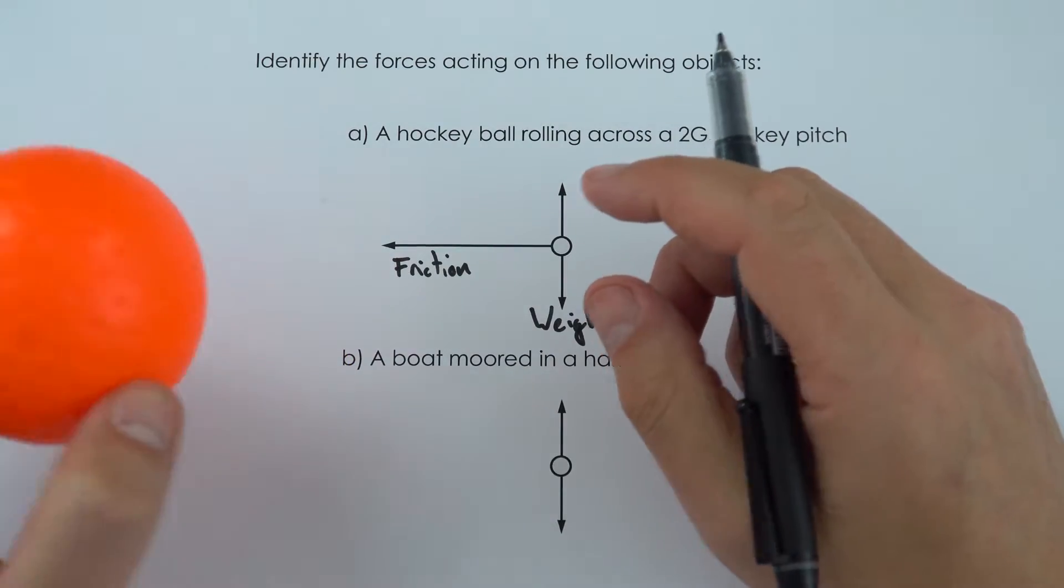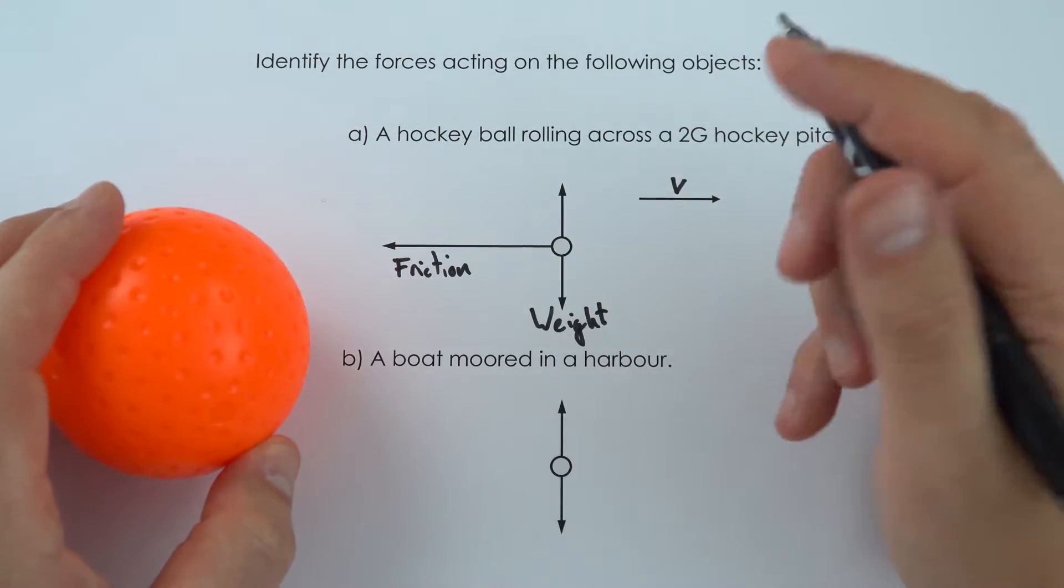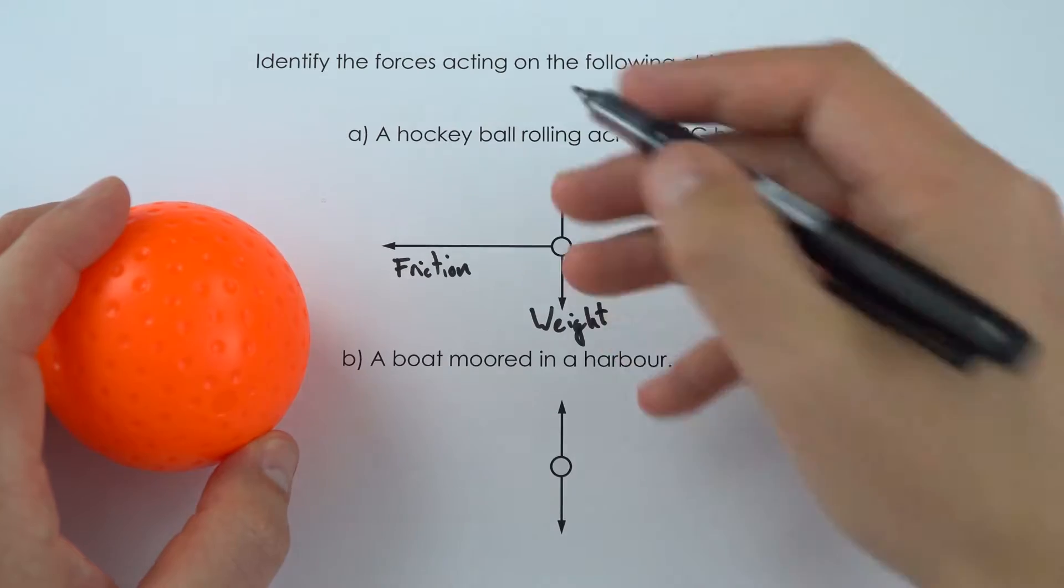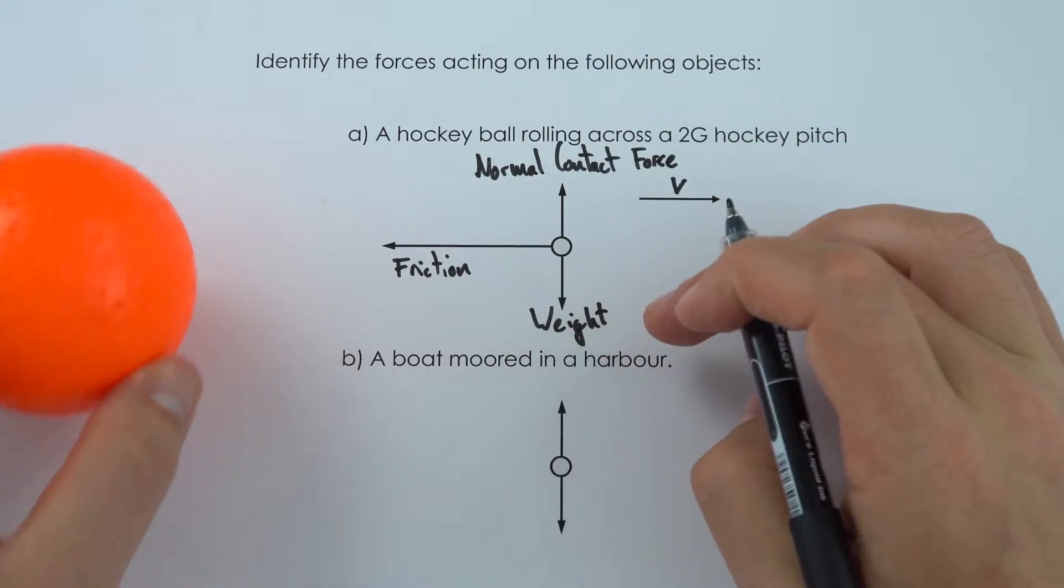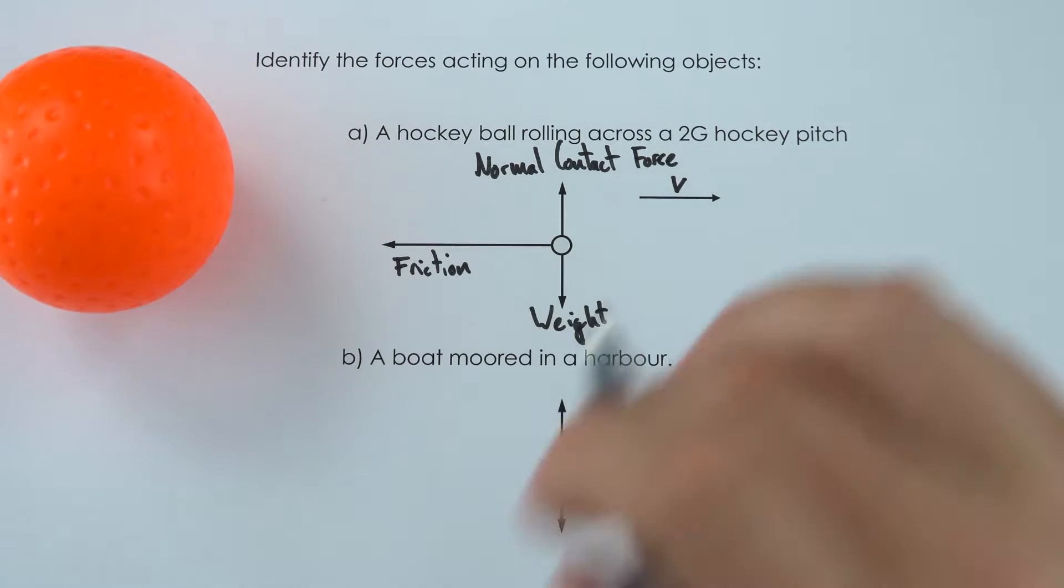And counteracting this weight, what stops it falling through the actual hockey pitch itself is that that pitch is pushing upwards with what we call the normal contact force. So these are the forces which are acting on that ball as it's rolling along.